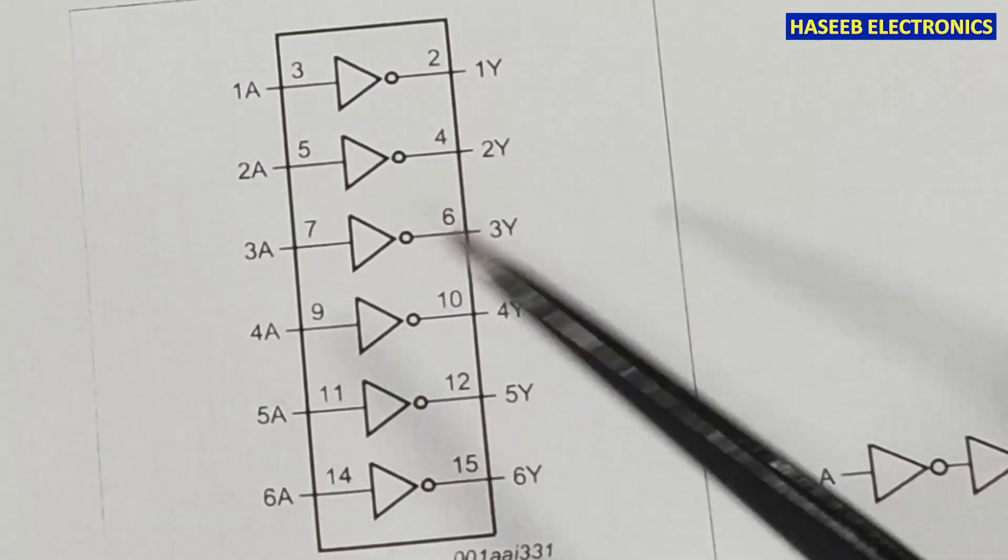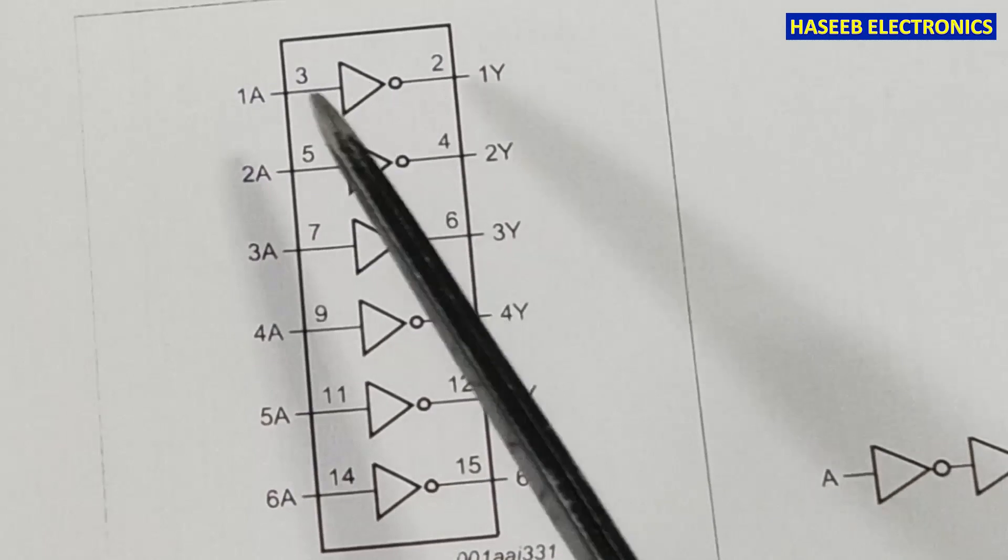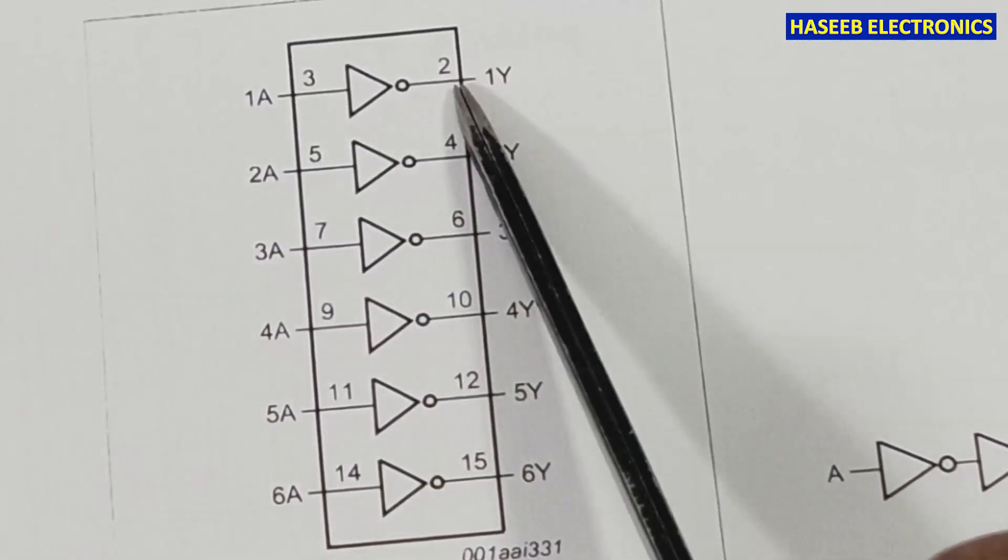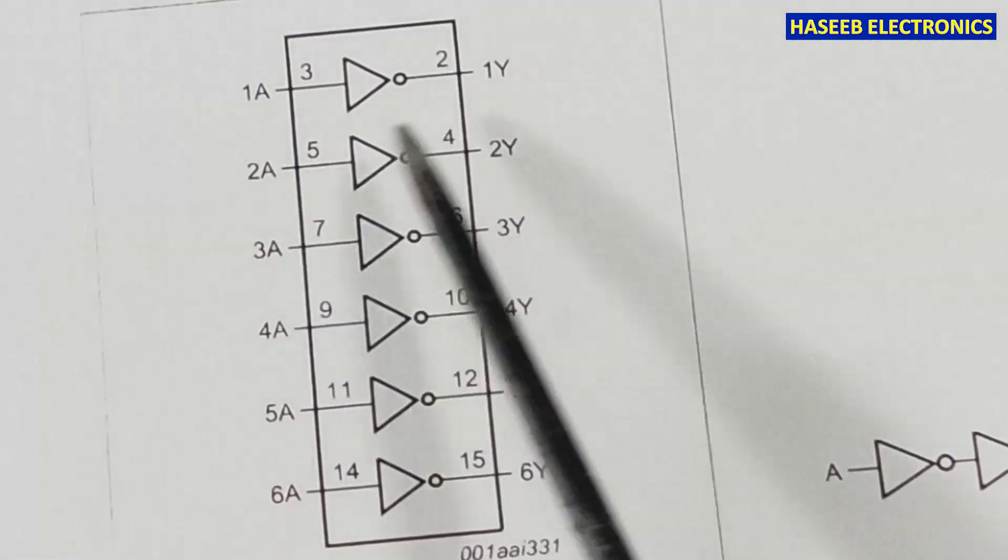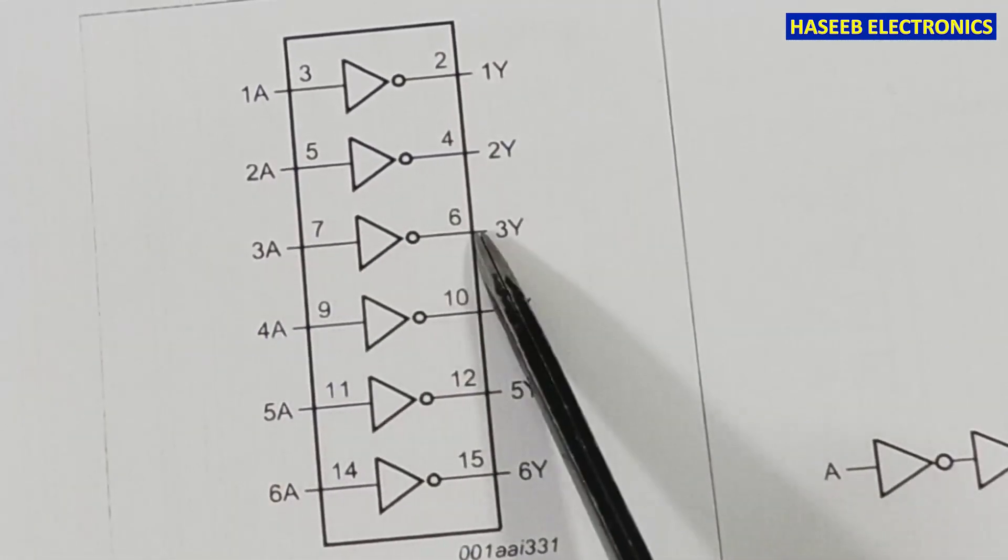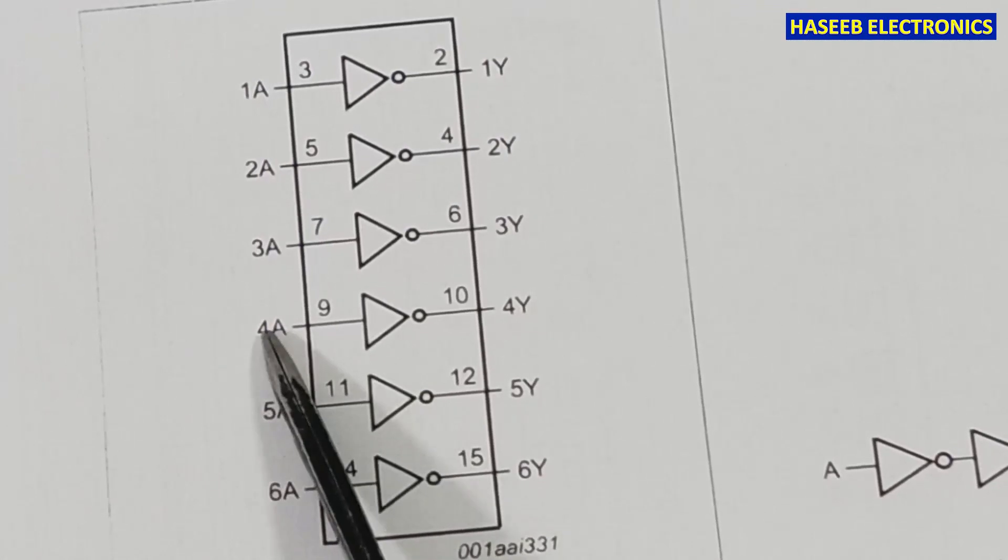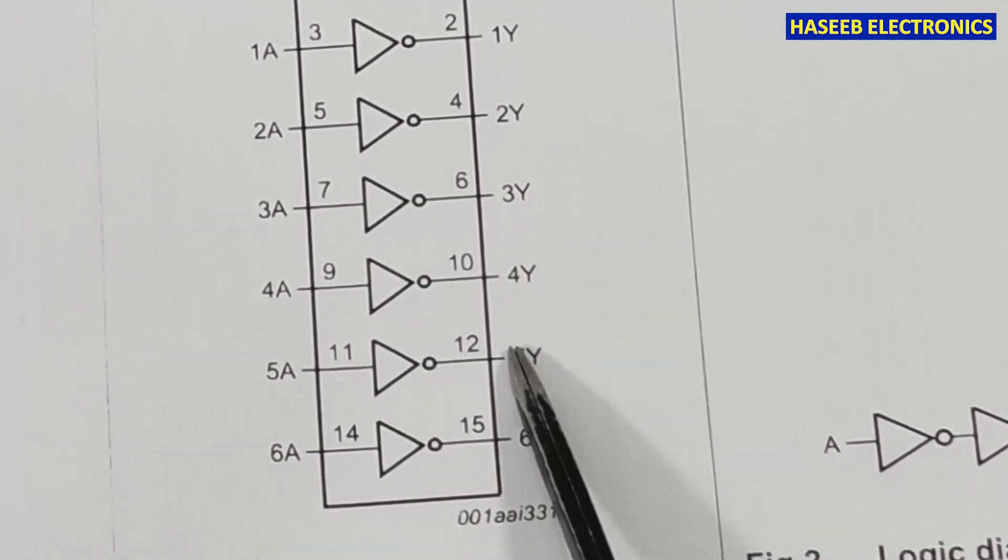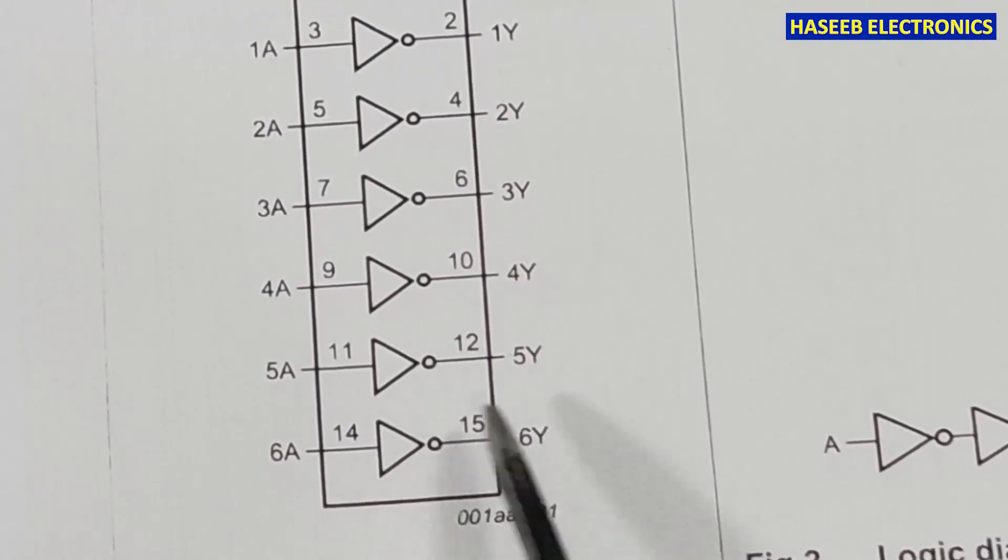It has inverters: 1A is input at pin 3, pin 2 is output. Pin 5 input, 4 output. Pin 7 input, 6 output. Pin 9 input, 10 output. Pin 11 input, 12 output. Pin 14 input, 15 output.